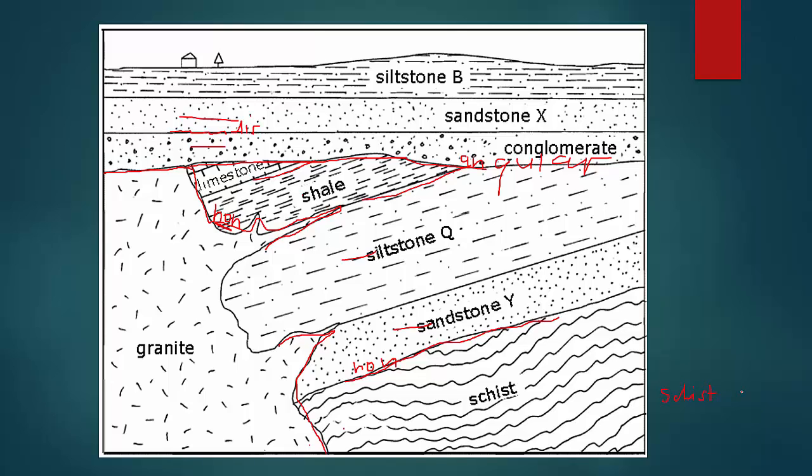Now, after the schist, what came? It's not the granite because these guys had to be here for the granite to come through. So, the next layer is the sandstone, the Y. And after that, the siltstone, because they are just superposition. They are on top of each other. So, the siltstone, Q. After that, the shale, and it doesn't have any letter, so I just will use S. So, this is going to be S. And then, there is this limestone. I will call it L. So, the limestone is the last one here. And then, we got to this unconformity, and it's an angular one.